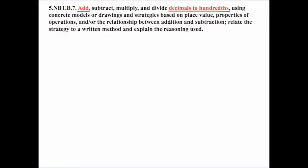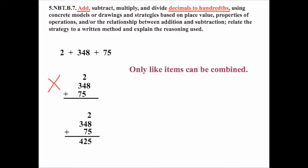Now that we have a better idea of what numbers are allowed, let's focus on adding decimals to hundredths. Let's relate this back to whole numbers. We have to put numbers vertically, but we can't just put them any way we want — that would be incorrect. We teach students that we have to align them. The critical idea is that only like items can be combined, so we align to add ones with ones, tens with tens, and hundreds with hundreds.